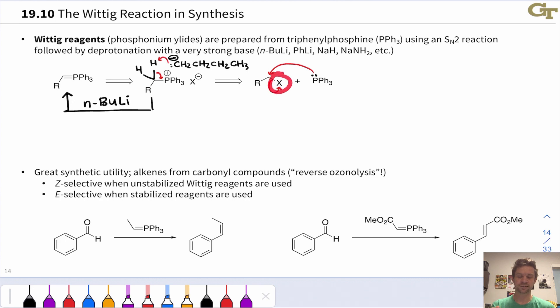Notice that X minus is kicked off as a leaving group. This is typically something like bromide or chloride and we've made the new phosphorus carbon bond with phosphorus charge increasing by one unit, formally speaking. So this is an SN2 process as depicted.